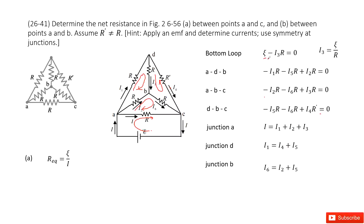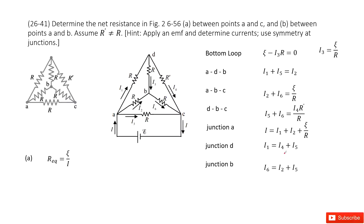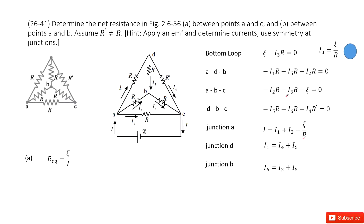We can now solve these multiple equations together. We can see that I3 equals epsilon divided by R, so we substitute I3 into the equations. Then we organize the equations and remove R to make everything more simplified.